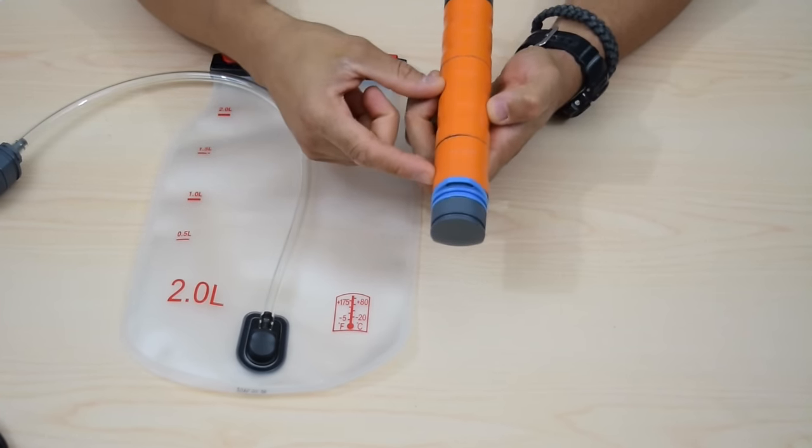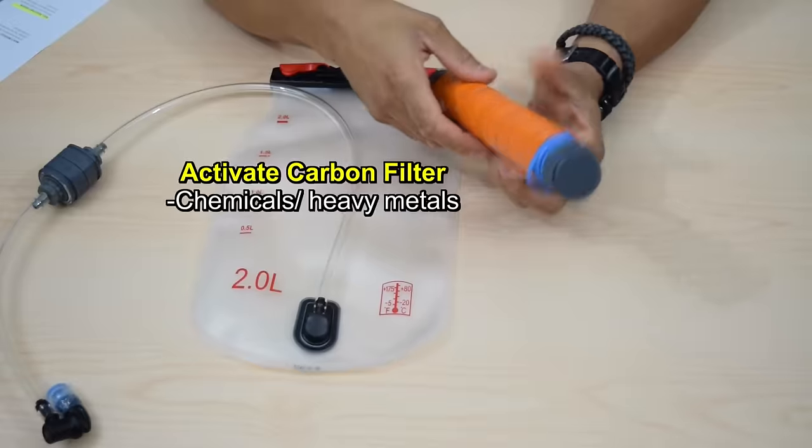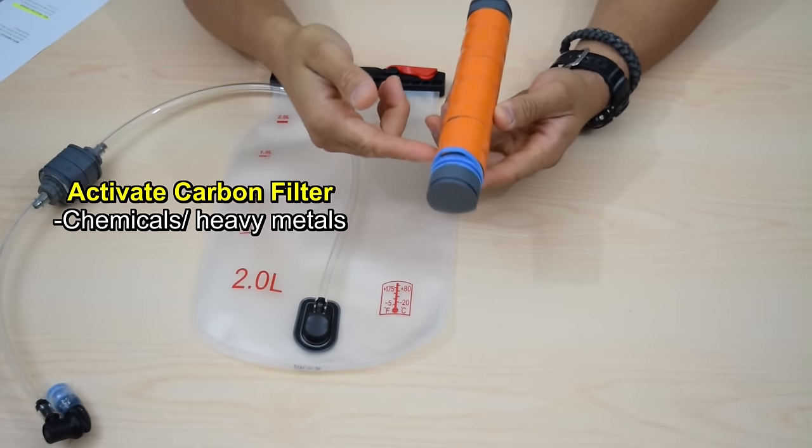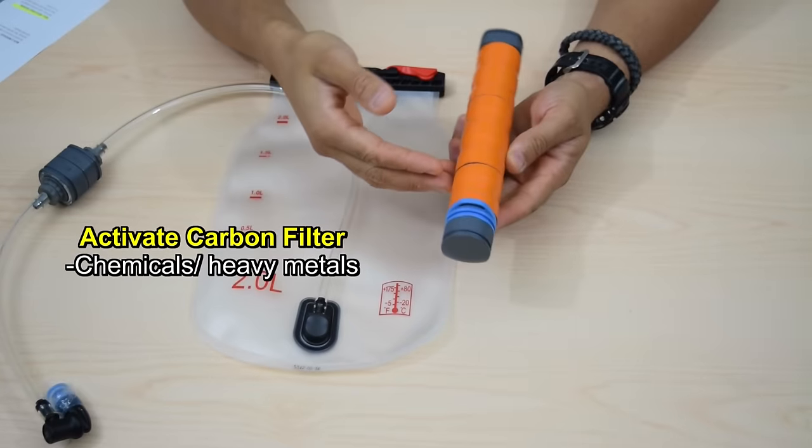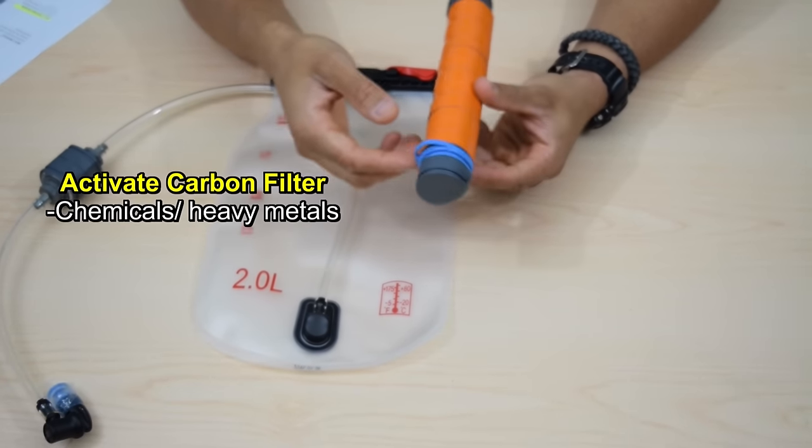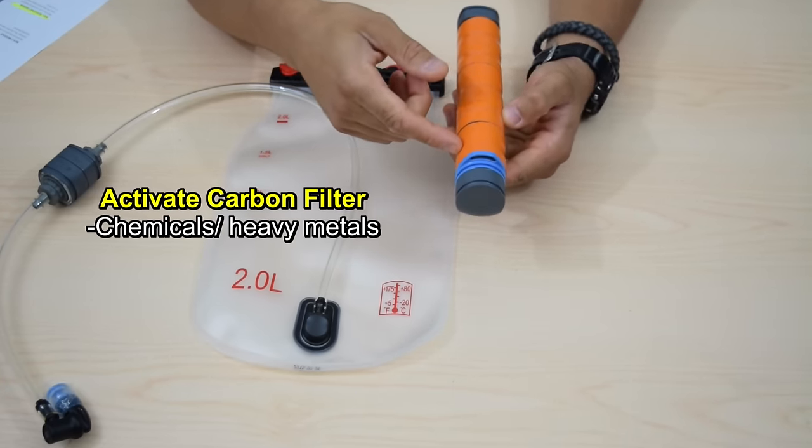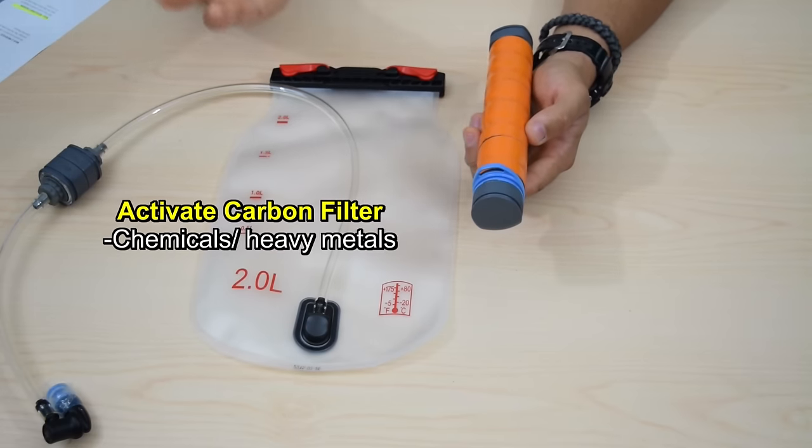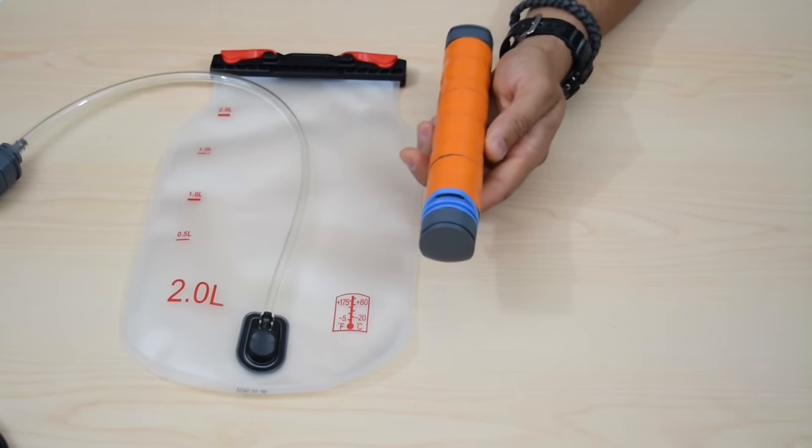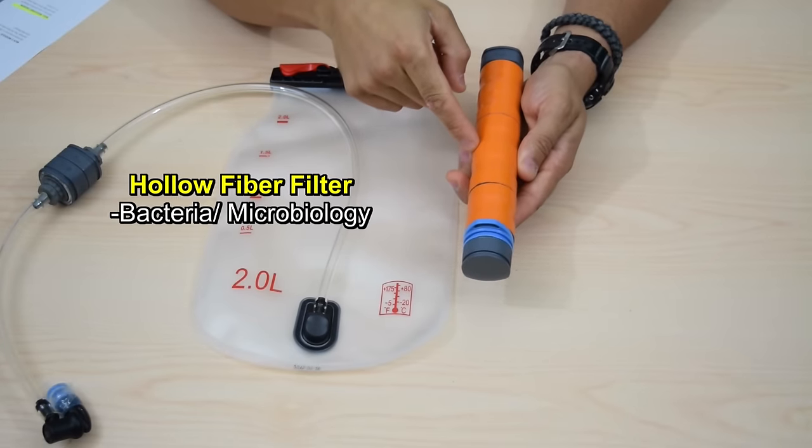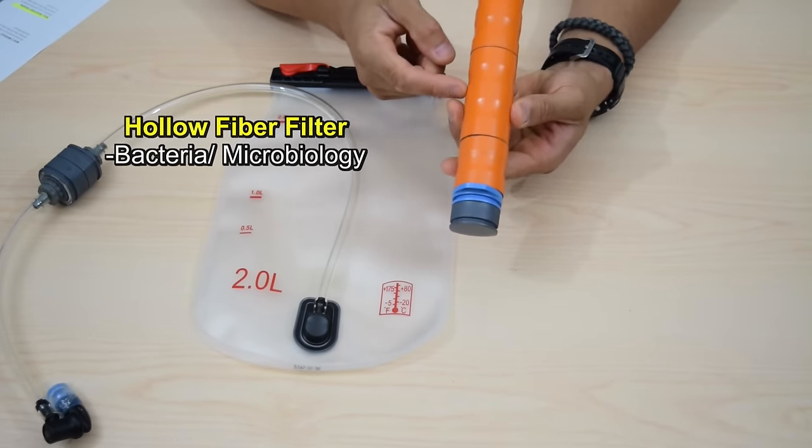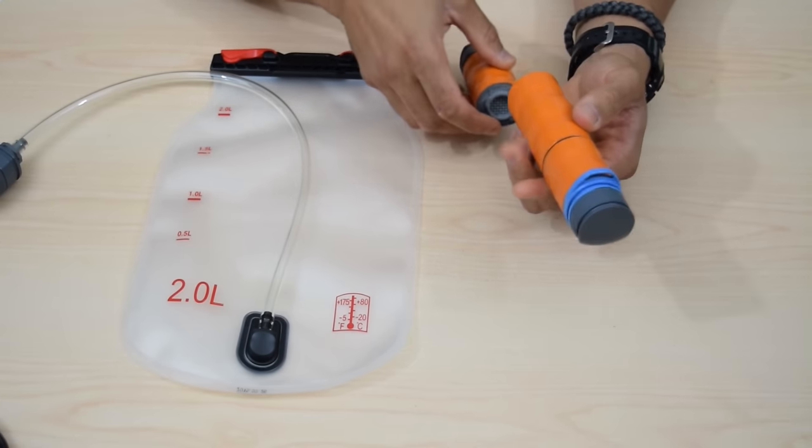So this first module here filters out chemicals. Remember, this is a prototype, so this isn't actually functional, so I've never tested it, but I assume it's going to work just like the Renovo Oasis did. So this is going to filter out your chemicals. This is the activated carbon filter. It's going to filter out your heavy metals and sediment and stuff like that. This is going to be your main filtration system here, the one you're probably going to use the most, and that's going to filter out bacteria.